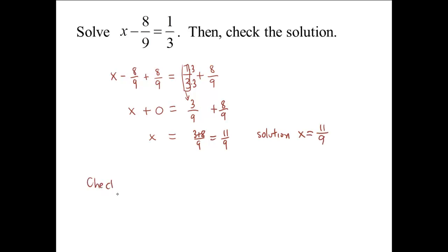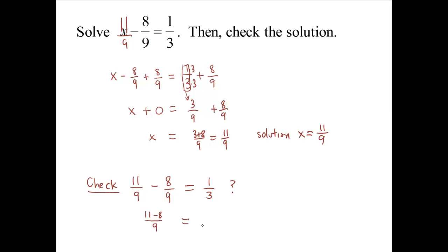Let's check. We take 11 ninths and put it back in place of x: 11 ninths minus 8 ninths equals 1 third. On the left side we have 11 minus 8 over 9, which is 3 ninths. Is 3 ninths equal to 1 third? Yes, 3 ninths is indeed equal to 1 third. We have a true statement, so x equals 11 ninths is the solution.